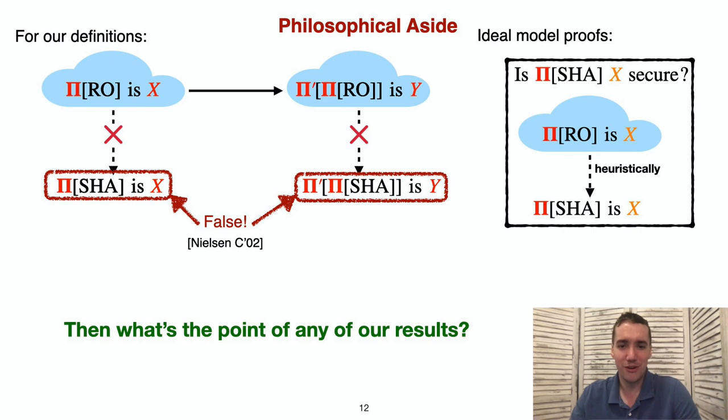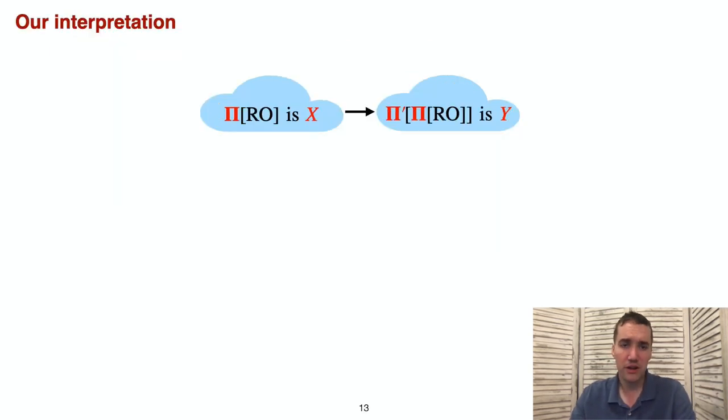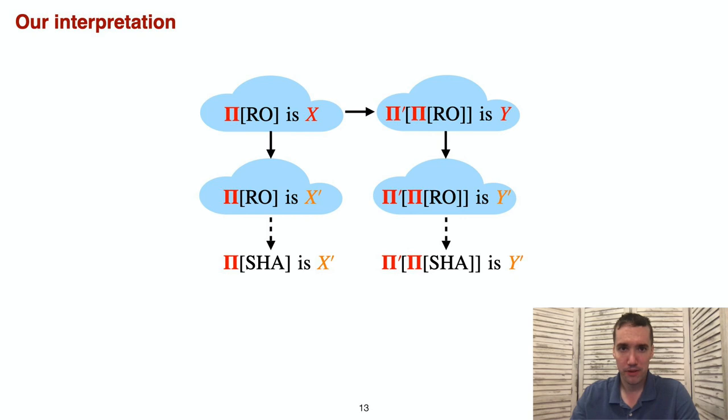The interpretation I would like to put forth works like this. First note that our notions x and the higher level notions y that we work with in this paper are in some senses incredibly strong notions. So our perspective here is that we could think of there being some weakened analogous definitions x prime and y prime which are strong and give us desirable properties but avoid these impossibility results of Nielsen and may be achievable in the standard model. Because of the clear strength of x and y, we can be convinced that they will imply any reasonable x prime and y prime, even if we aren't quite sure what the right choice for x prime and y prime are yet.